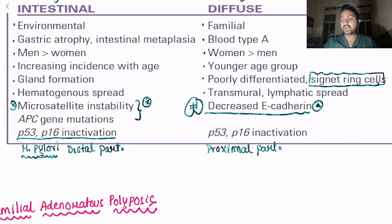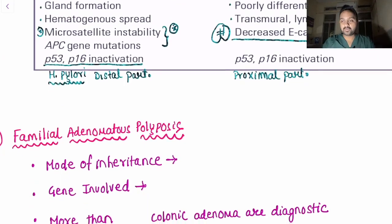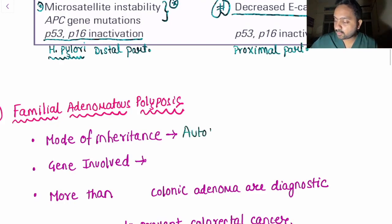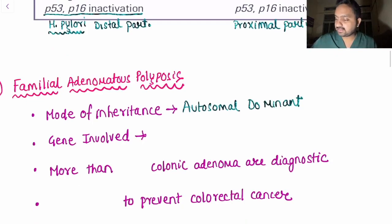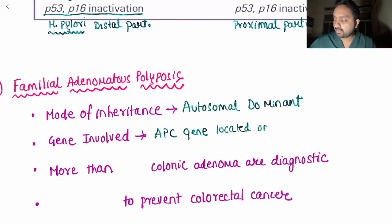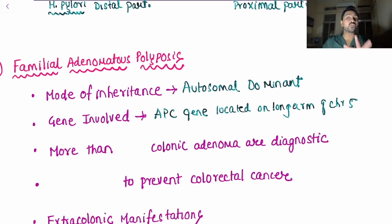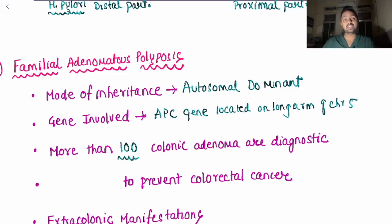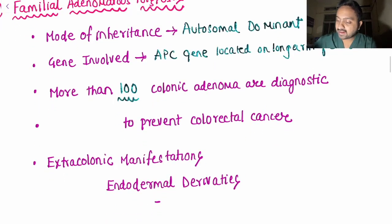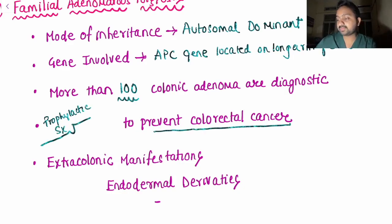Moving on to familial adenomatous polyposis (FAP). The mode of inheritance is autosomal dominant. The gene involved is the APC gene located on the long arm of chromosome 5. More than 100 colonic adenomas makes it diagnostic for FAP. Prophylactic surgery is the way to prevent colorectal cancer in FAP.